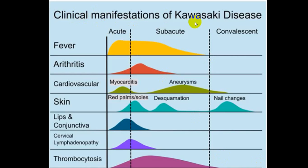Looking at the clinical manifestation stages: during the acute phase, you will have fever, beginning arthritis, myocarditis, skin manifestations, conjunctivitis, lymphadenopathy, and thrombocytosis — lasting about one to one and a half weeks. In the subacute stage, fever slowly declines, arthritis peaks and then declines, and during this stage there is always a chance of development of coronary artery vasculitis leading to aneurysm, with cardiovascular complications like arrhythmias, heart failure, and acute MI in children.